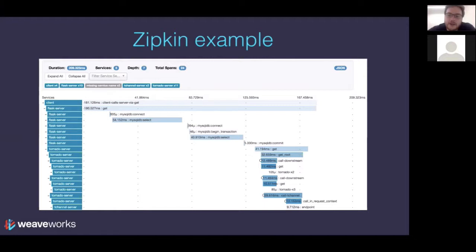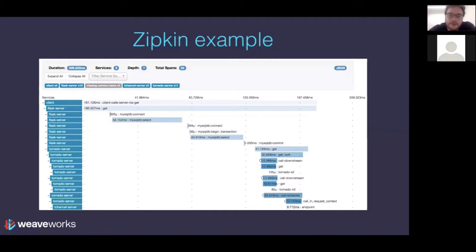Question: does Weave Cloud provide tracing graphs like Zipkin — span graphing? Unfortunately not. We don't yet provide a tracing solution. This talk was meant to highlight the different things available, with a side note that we provide two of them. If you're interested in tracing as a service in Weave Cloud, please reach out and let us know — that could help influence our product roadmap. I personally think that would be awesome.